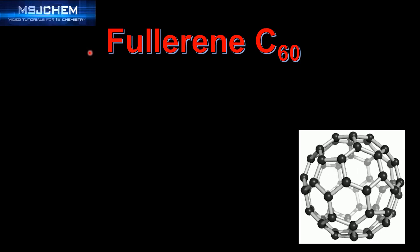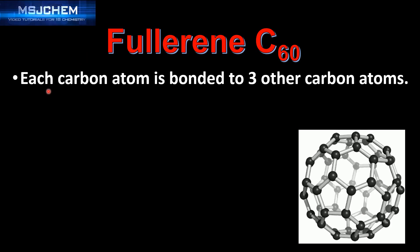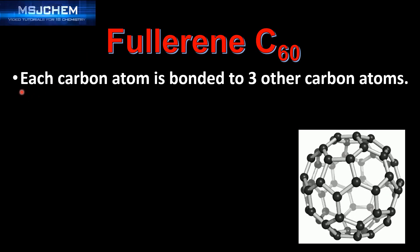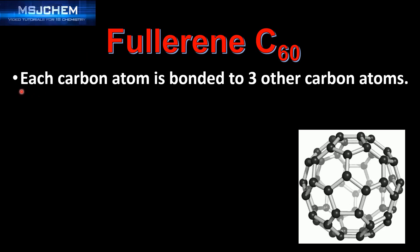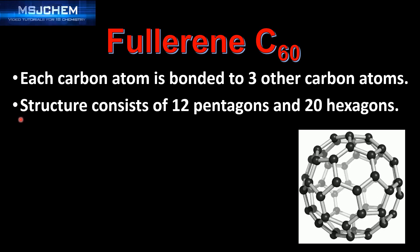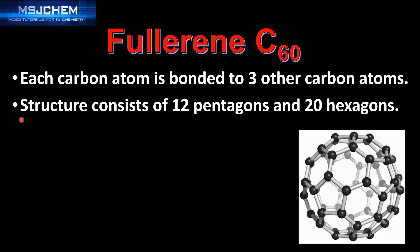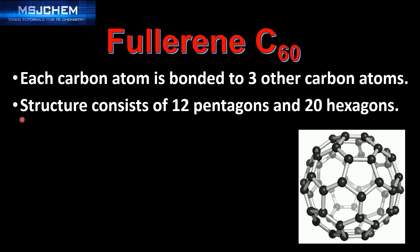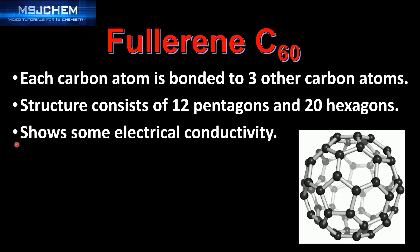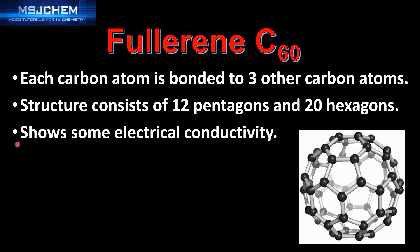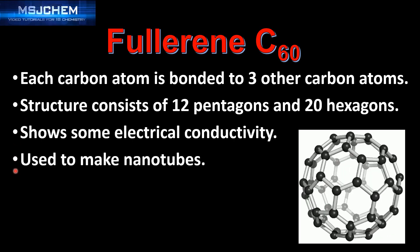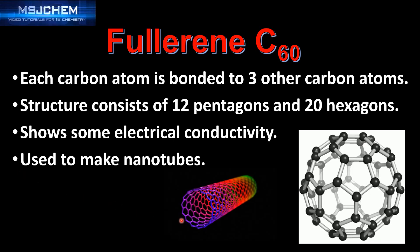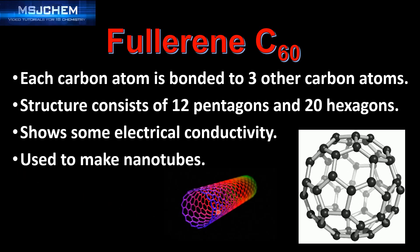Next we look at fullerene C60. Each carbon atom is bonded to three other carbon atoms. The structure consists of 12 pentagons and 20 hexagons. It shows some electrical conductivity and it's used to make nanotubes — here's an example of a carbon nanotube.